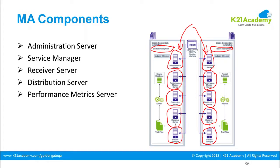Performance metrics server is one of the important additions. In service manager you can see report files and related service information like lag. Administration server is where you configure services and processes. Performance metrics server collects the performance of processes — similar to the stats command previously used — showing how GoldenGate is performing, such as transactions per second. All of this is now available as a GUI-based web interface, with everything connected via APIs.